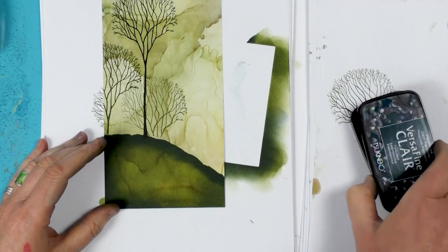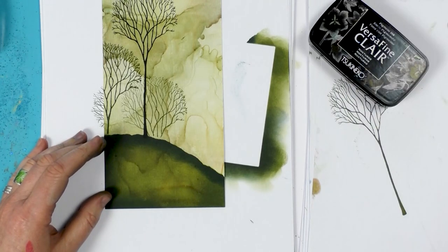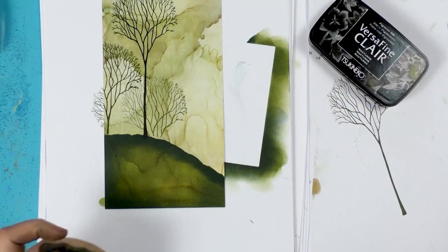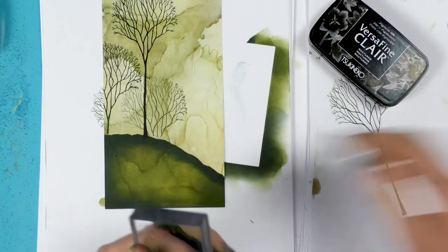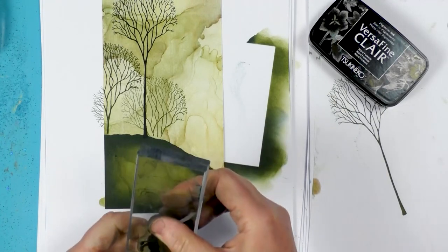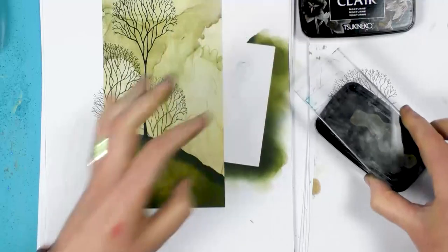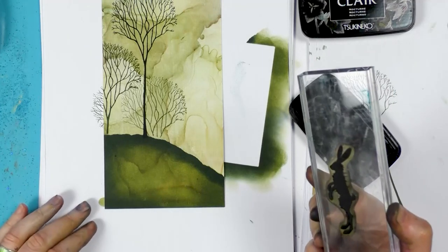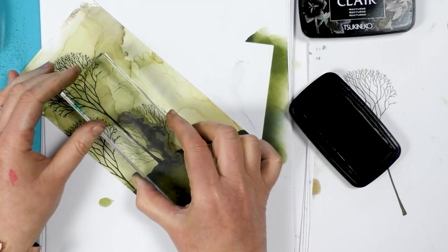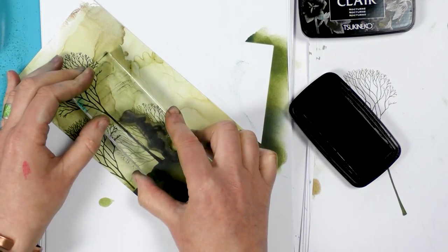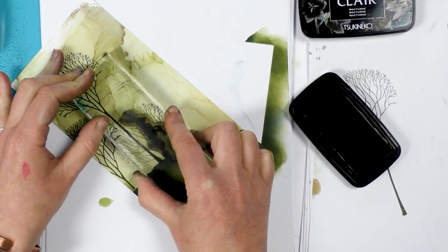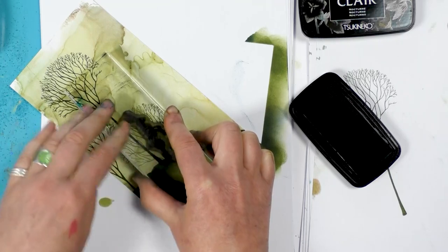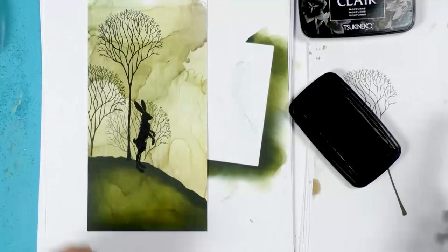Put my lids on before I forget. And now we're going to ink up our little hare that we have here. I'm going to ink that up in the Nocturne. And then just bob that down.